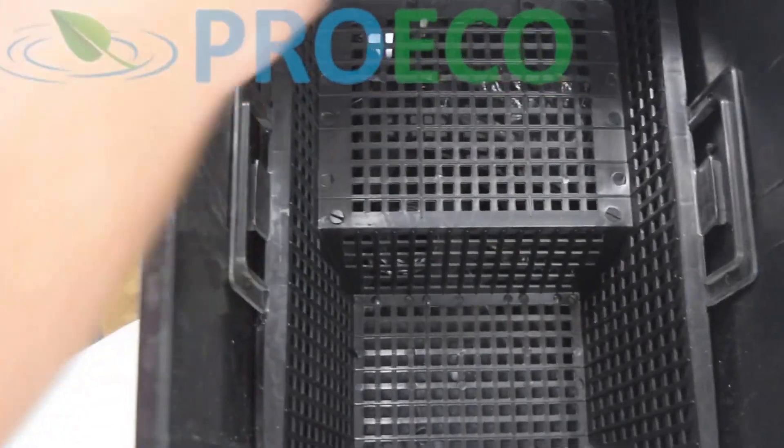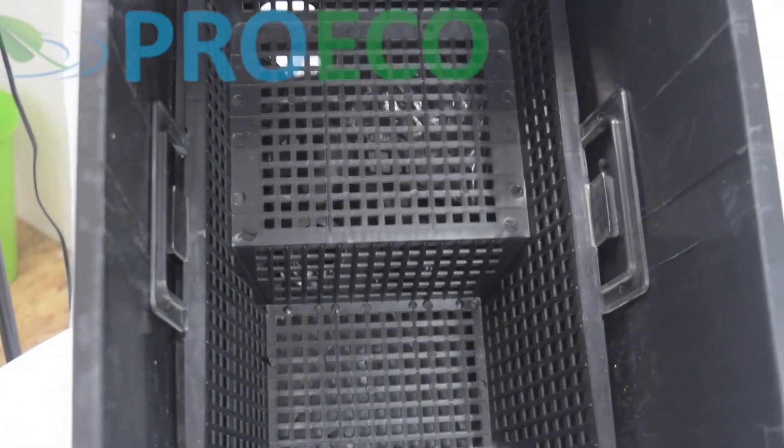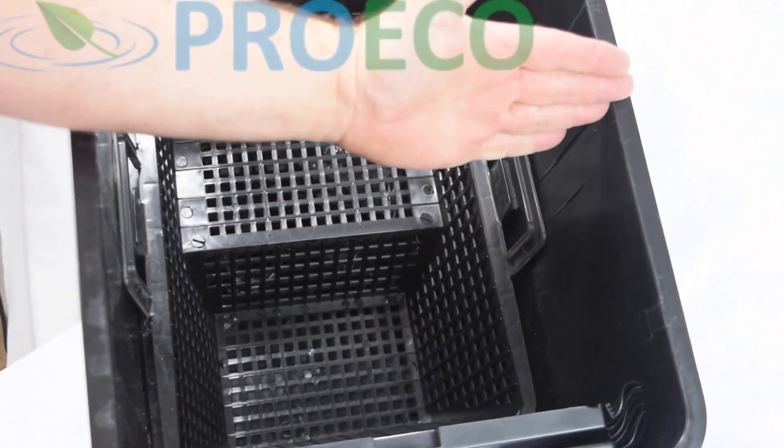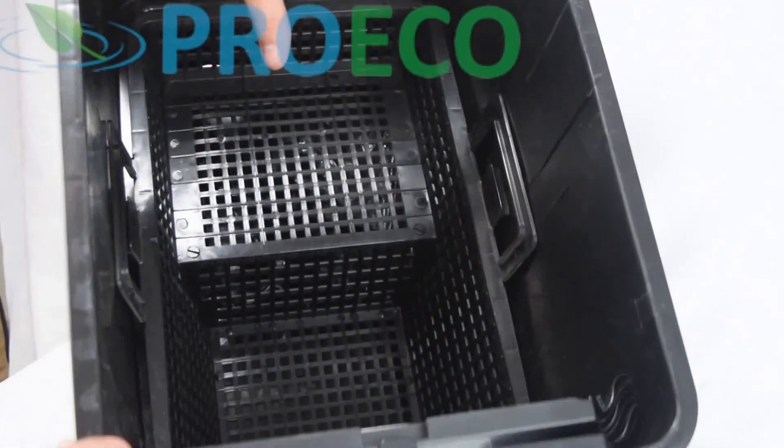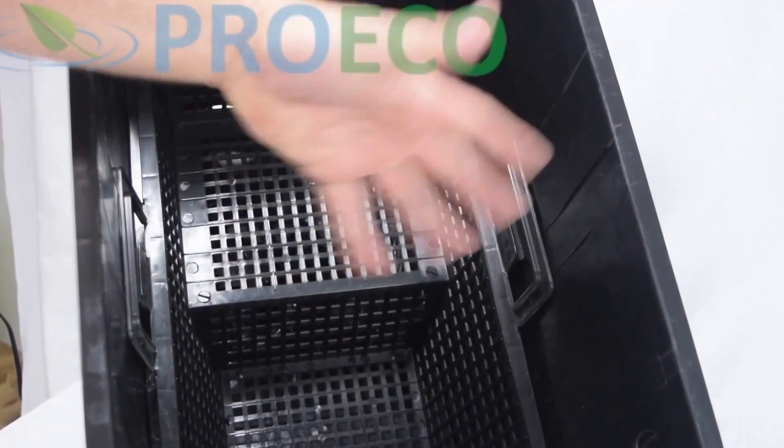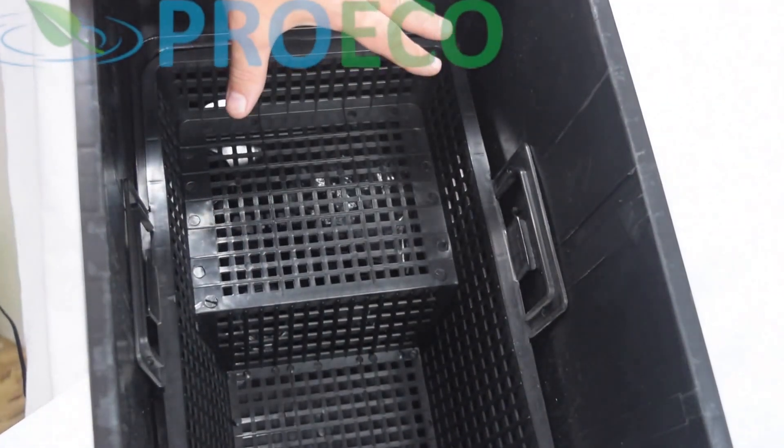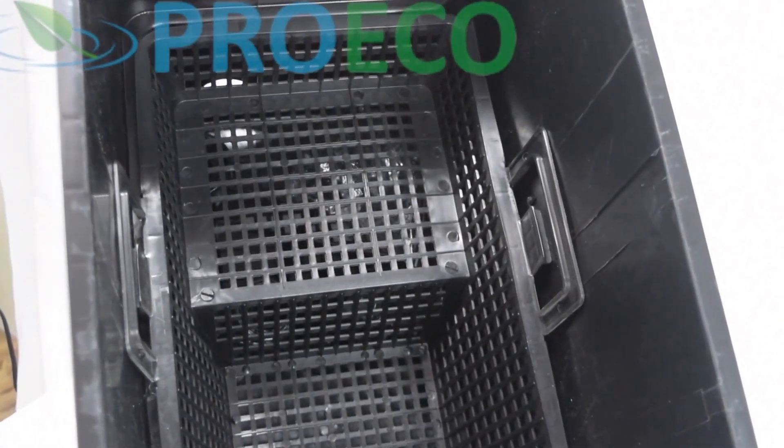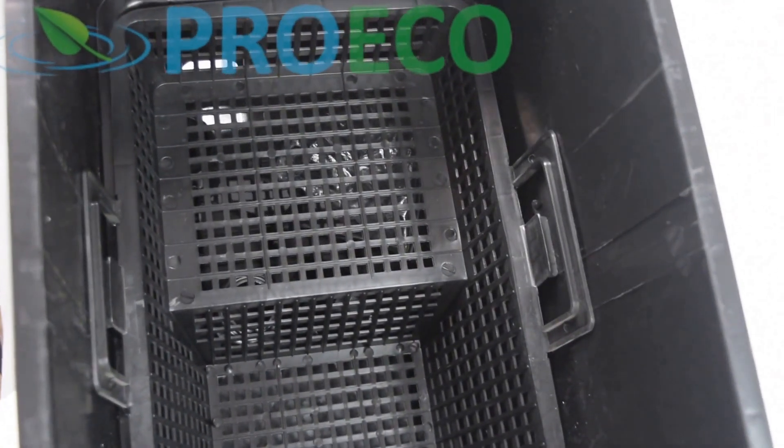So the feature of this skimmer is that it has a huge basket. One of the problems with skimmers is that often times they'll just have a little basket right here or a net and behind here is where the pump sits. What happens though is if this net gets filled the pump doesn't get enough water and the pump ends up burning out and failing. This will never happen with this skimmer.